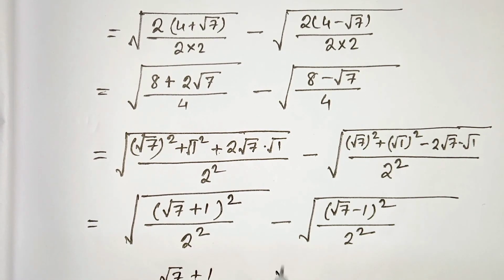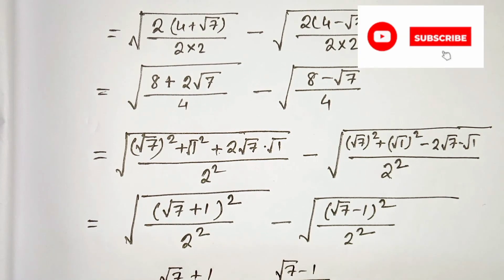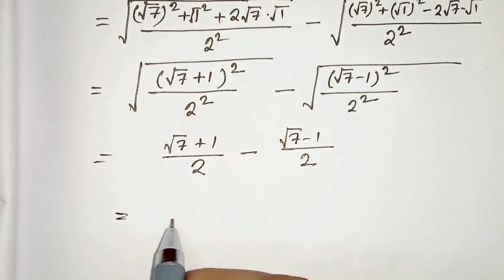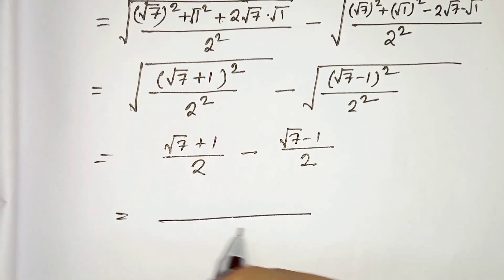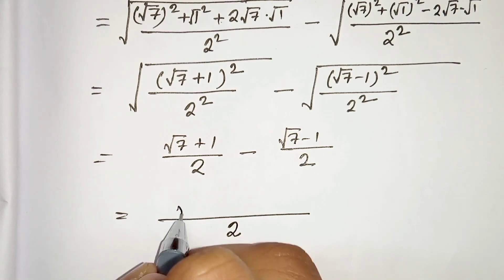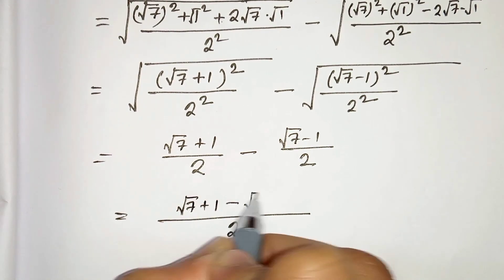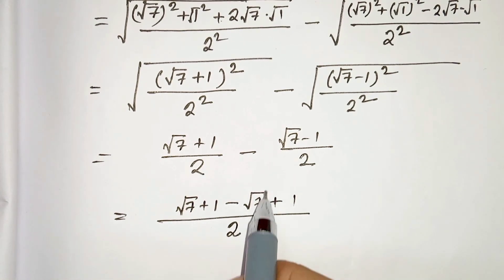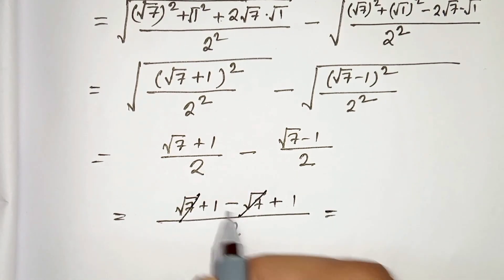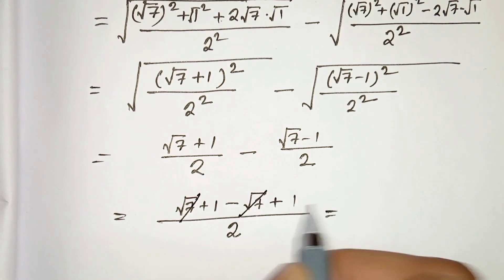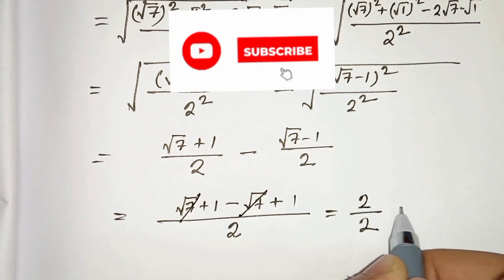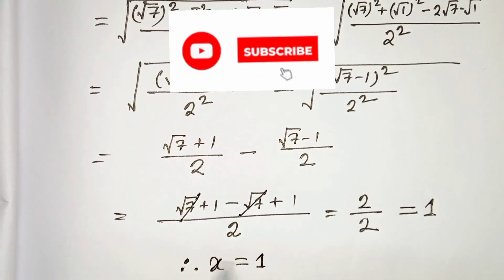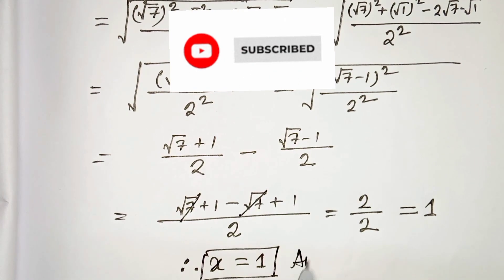Now taking the same denominator we get root 7 plus 1 minus (root 7 minus 1), and the minus and minus gives plus 1. So root 7 minus root 7 cancels, and we get 1 plus 1 equals 2 divided by 2, which is 1. Therefore our x equals 1. This is our solution. Thanks for watching.